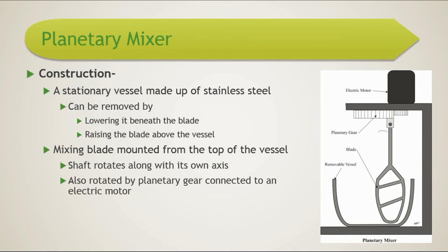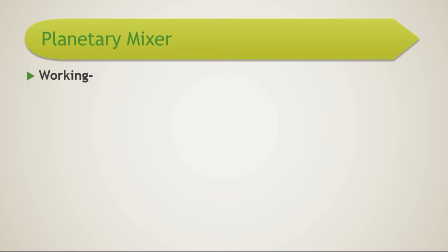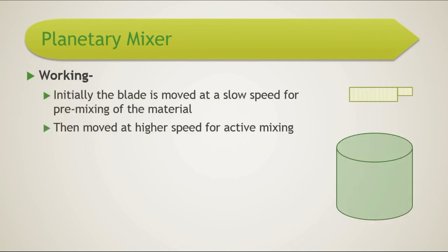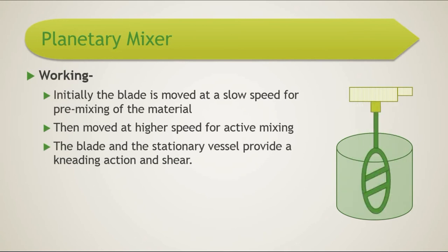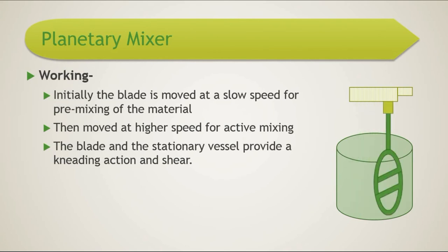These two movements allow it to reach every corner of the vessel. The plates in the blade are sloped, which causes upward movement of the powder to produce a tumbling effect. Initially the blade is moved at slow speed for pre-mixing, then at higher speed for active homogeneous mixing. The blade and the stationary vessel together provide a kneading action and shear which helps in the mixing process.